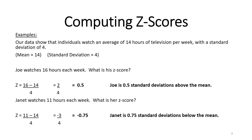We know Joe watched more TV than the average individual — he watched 16 and the average was 14. We take Joe's raw value of 16, subtract the mean of 14, and divide by the standard deviation of 4. That gives us an answer of 0.5. So Joe's z-score is 0.5. How do we interpret that?